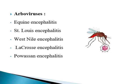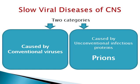In addition to typical meningitis and encephalitis, we have another form of CNS infection called slow viral diseases of the CNS. These diseases usually develop very slowly, and they are of two categories: the first is caused by conventional viruses, and the second is caused by unconventional infectious proteins called prions.